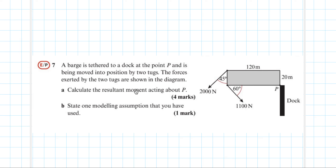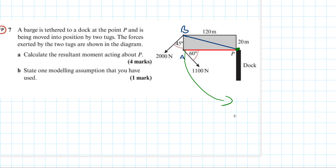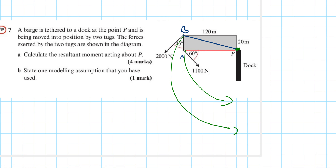Question 7. A barge is tethered to a dock at point P and is being moved into position by two tugs. The forces exerted by the two tugs are shown in the diagram. Calculate the resulting moment acting about P. Both forces are going to produce anti-clockwise moments, because that's what rotates the barge anti-clockwise. So they're going to add together. Let's label them force A and force B and take them step by step.